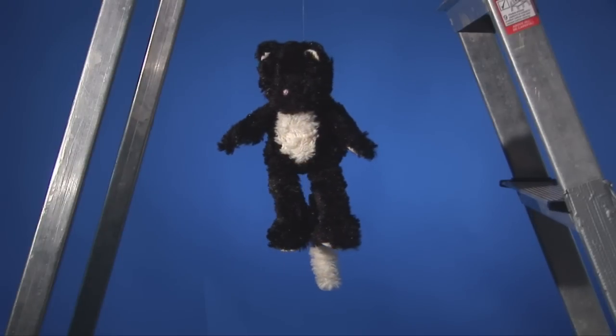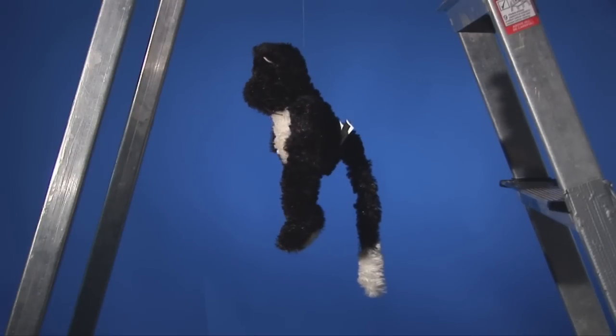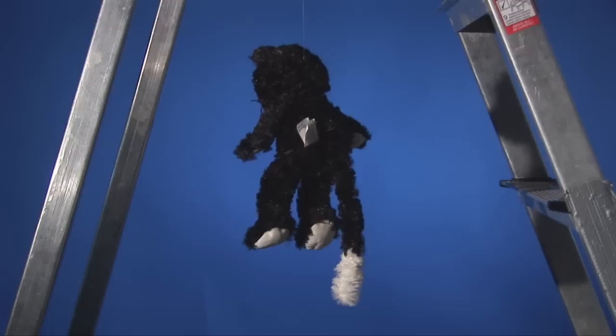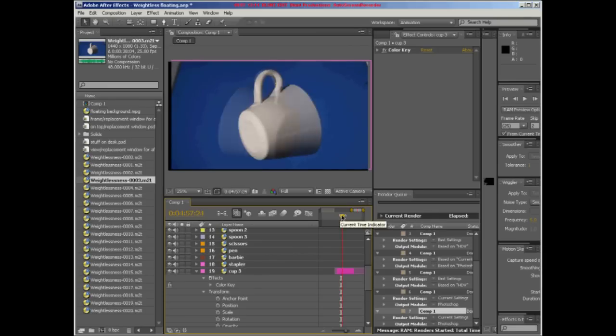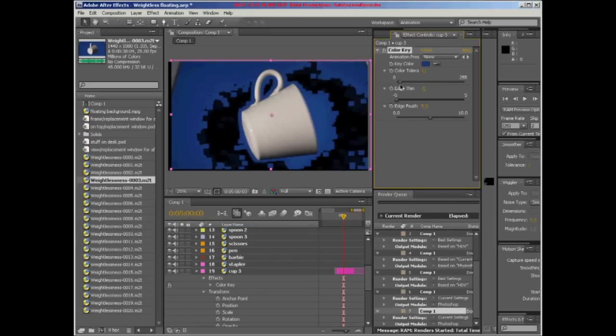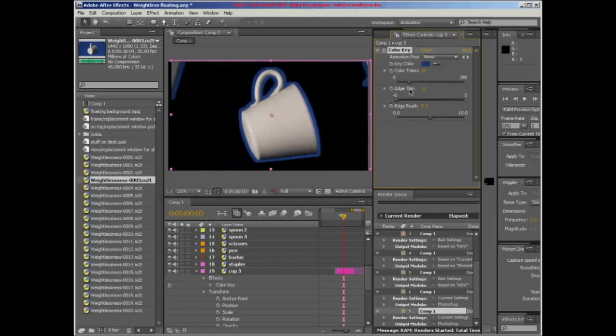Take your video of the rotating object and using an application such as Adobe After Effects, key out the background and mask off any junk still in the frame.